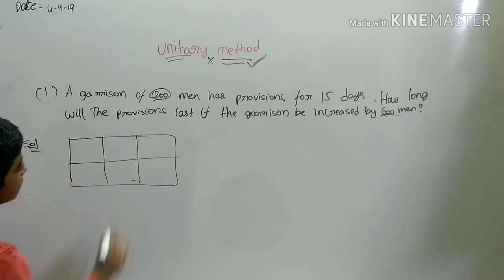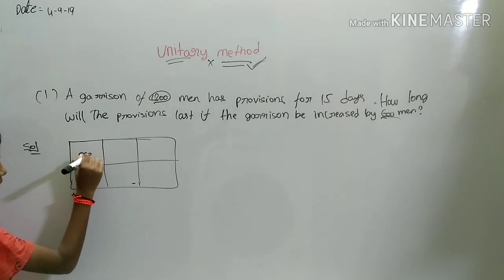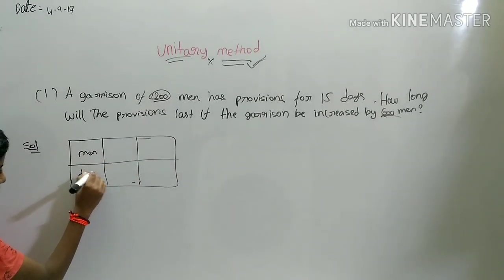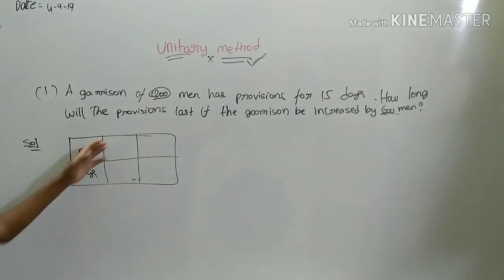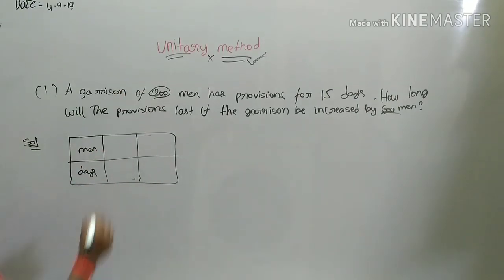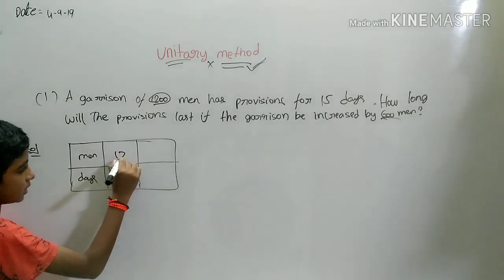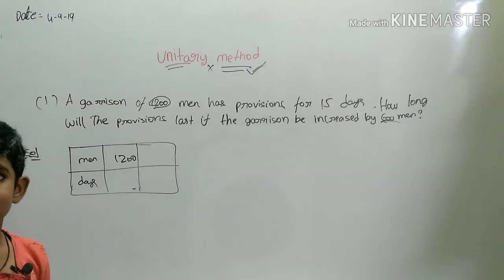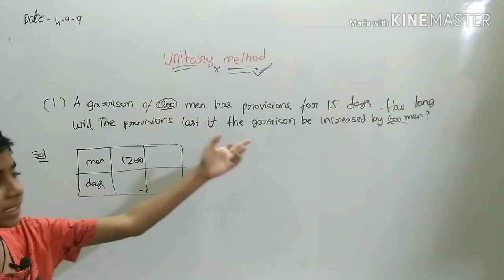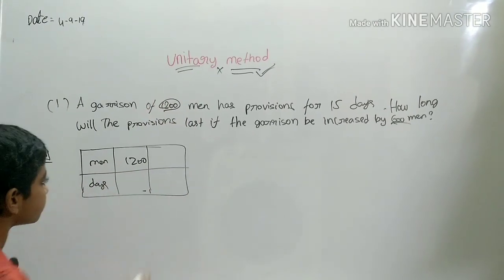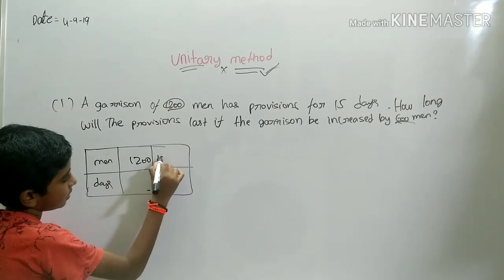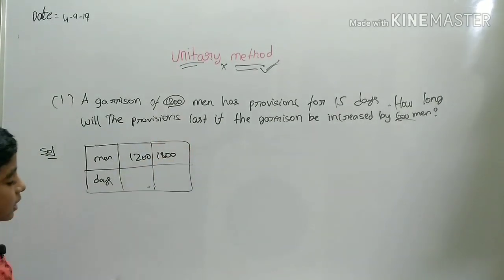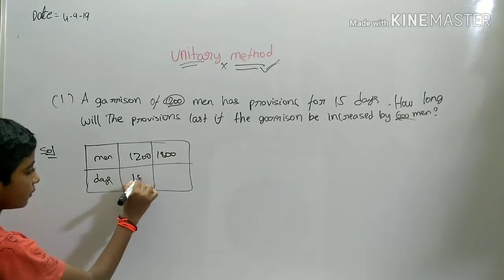We draw a table with columns for men and days. First, men: 1200. After increase: 1200 plus 600 equals 1800 men. Days for 1200 men: 15 days. Days for 1800 men: X — we don't know.